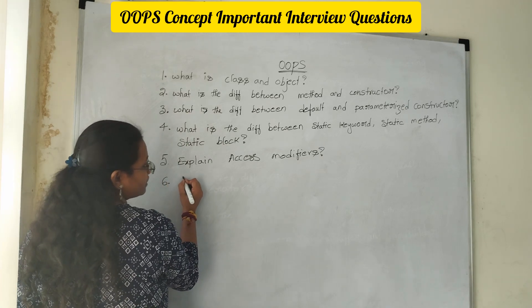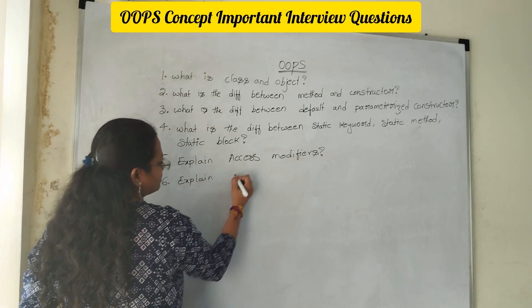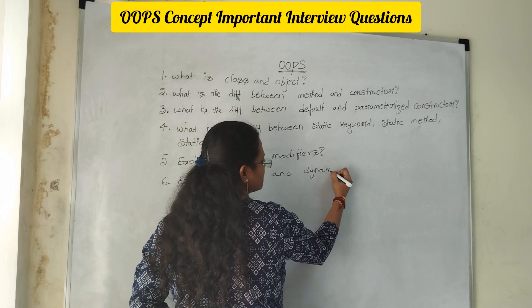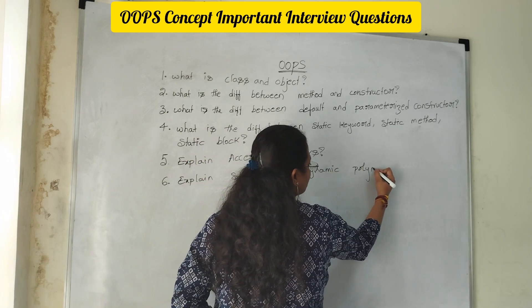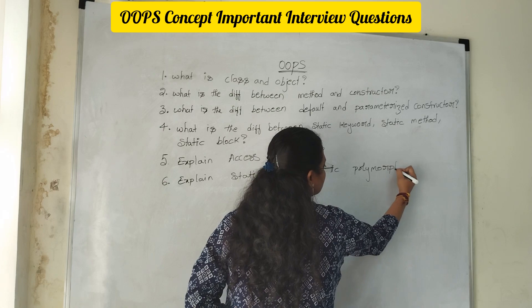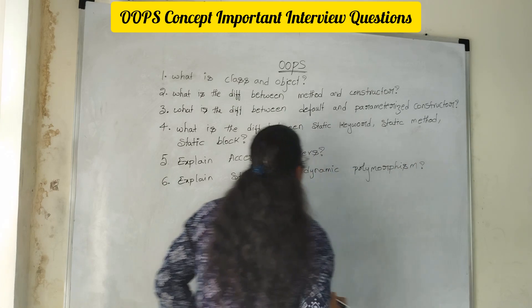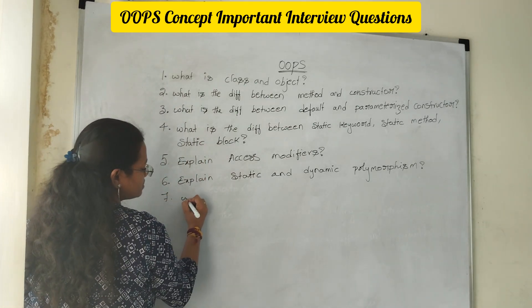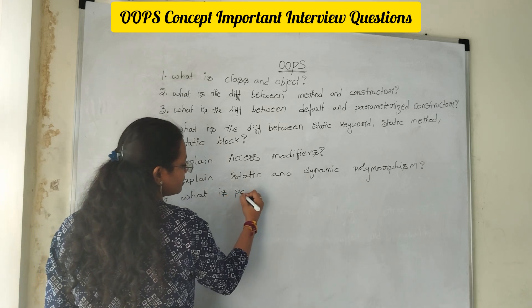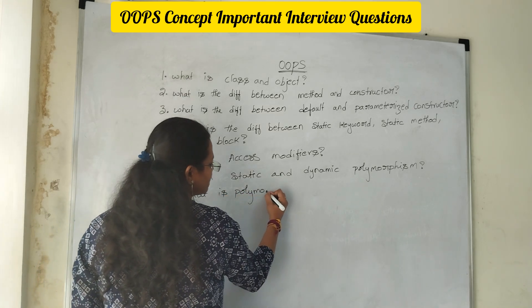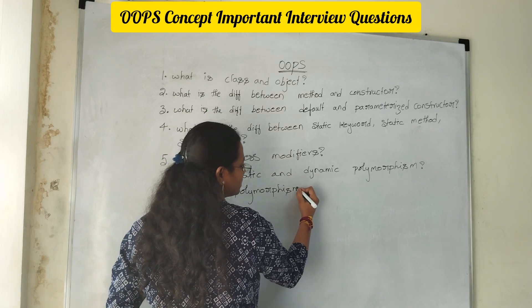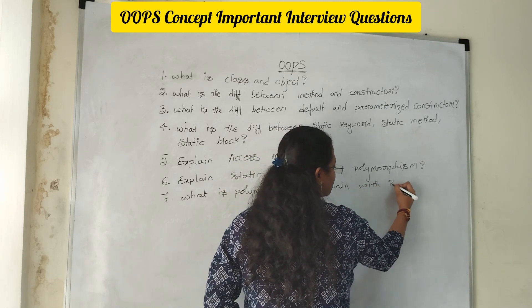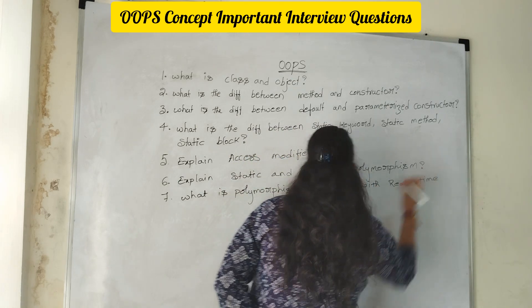Sixth one: explain static and dynamic polymorphism. Either they can ask you what is polymorphism also. Explain with a real-time example.